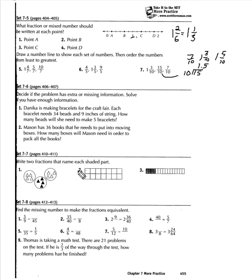Down on set 7-7, two fractions that name each shaded part. Number two is interesting because I can't really tell what is shaded or not. But on number three, we have one, two, three, four, five, six, eight, nine, ten, eleven, twelve, thirteen, fourteen, fifteen. So there are 16 total parts and four of them are shaded. So that's four divided by 16. And if we divide both sides by four, we get one-fourth. And that's the fraction that names that shaded part.